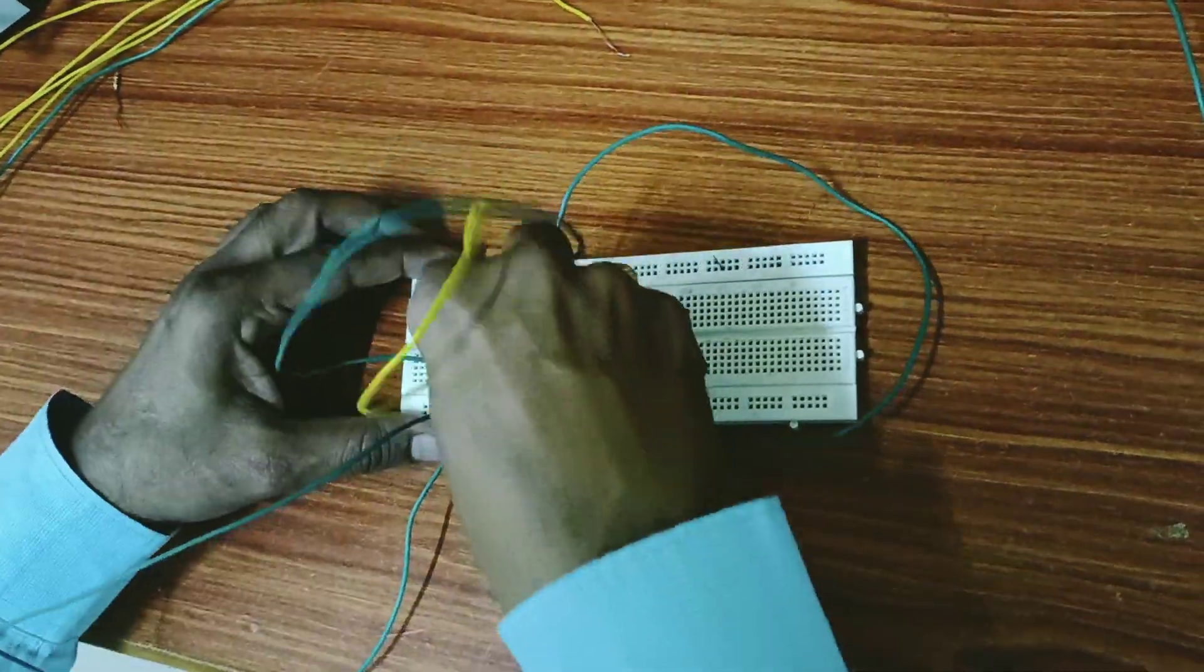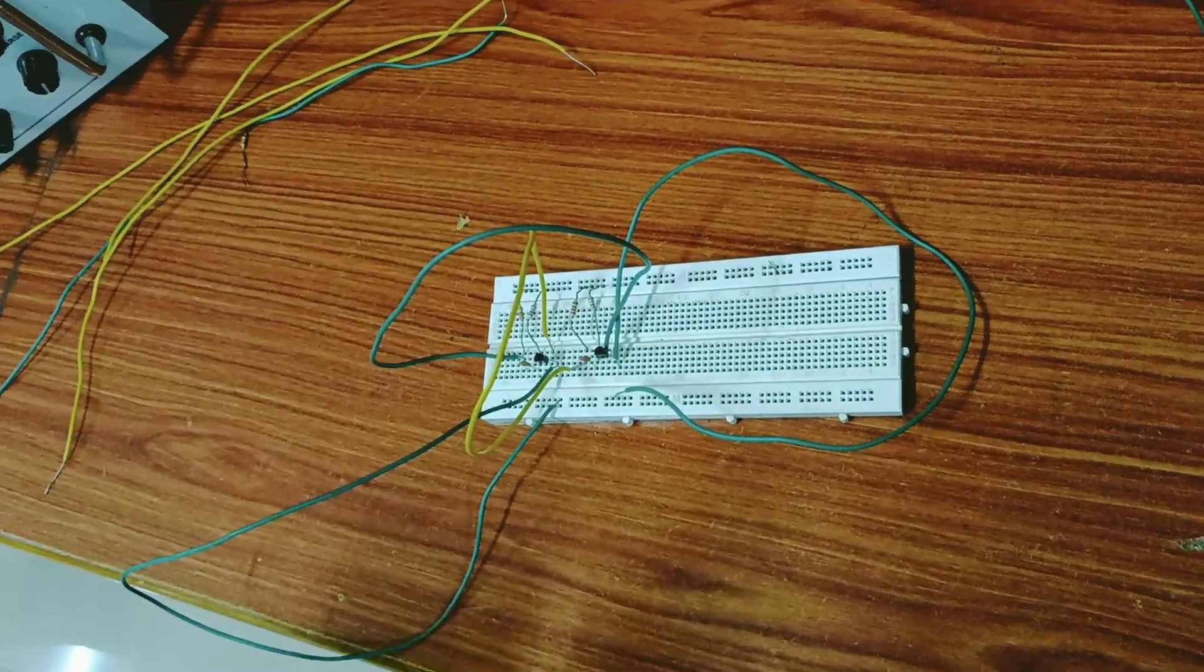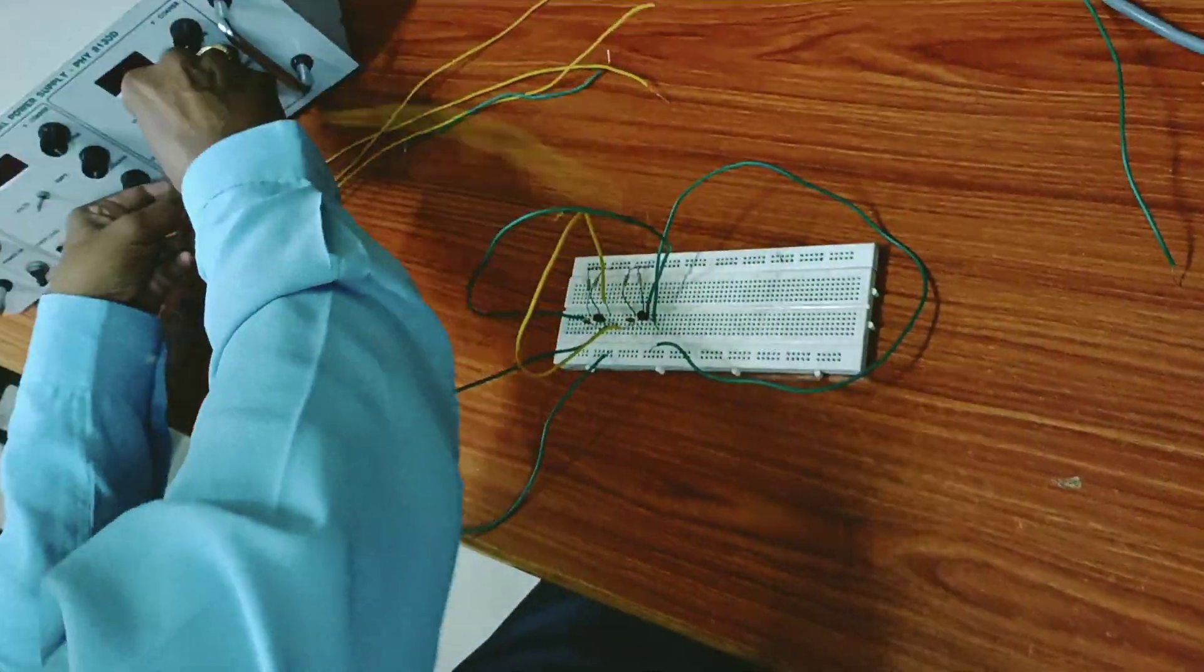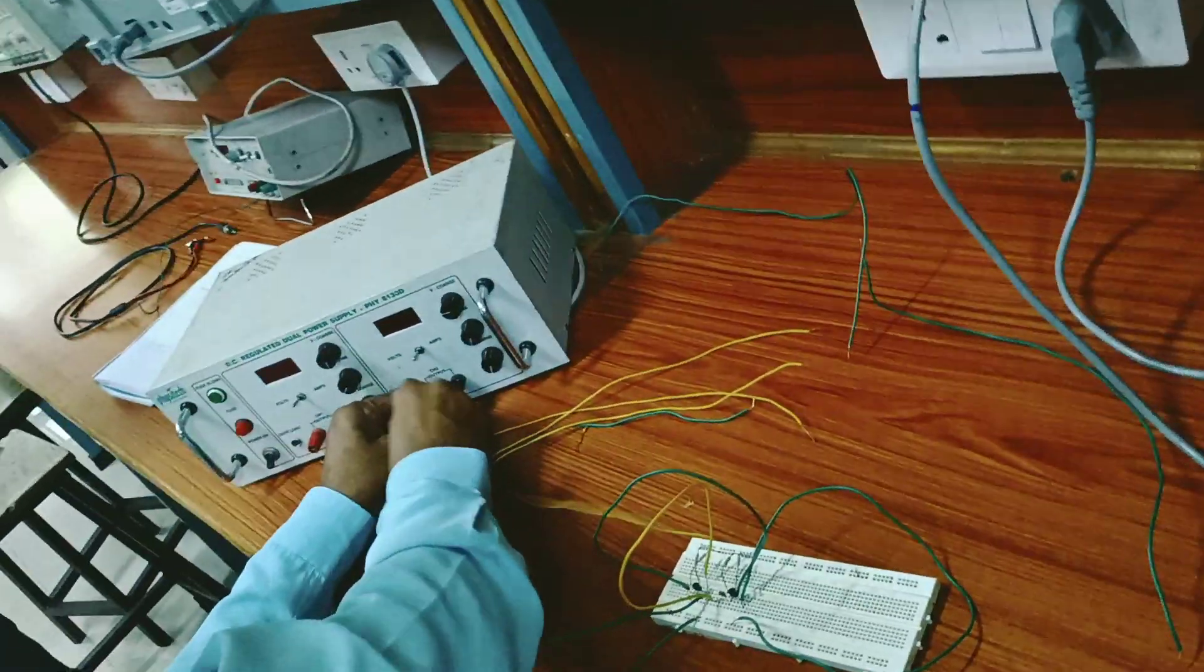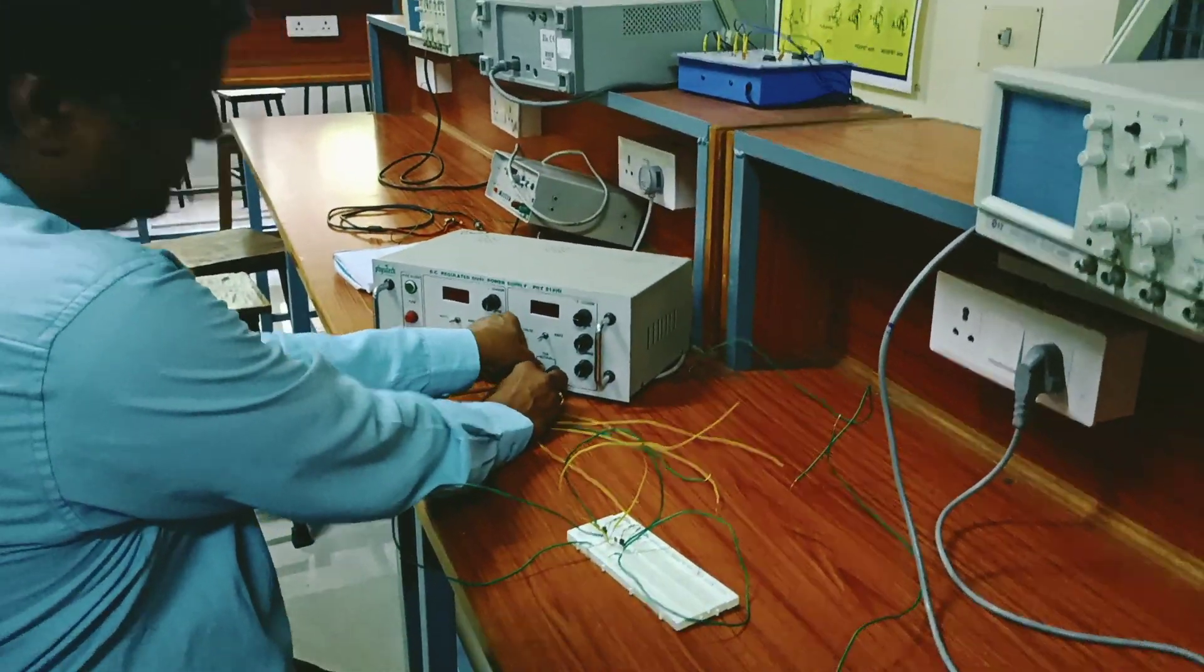This is about the circuit diagram. Now we need to give the input and output, that is the power supply connection and the output connection to the CRO. I am using 10 volts power supply.